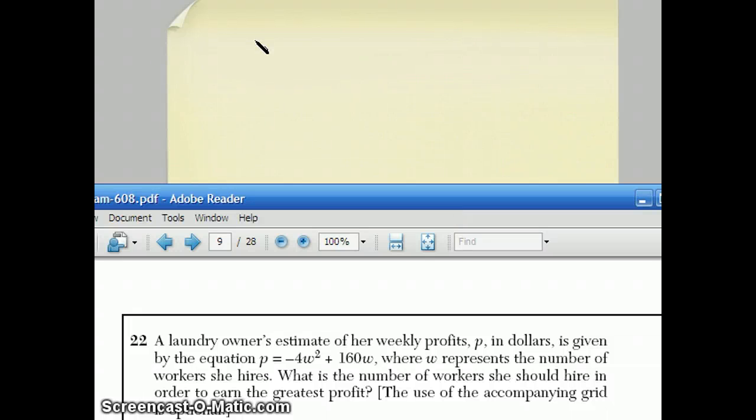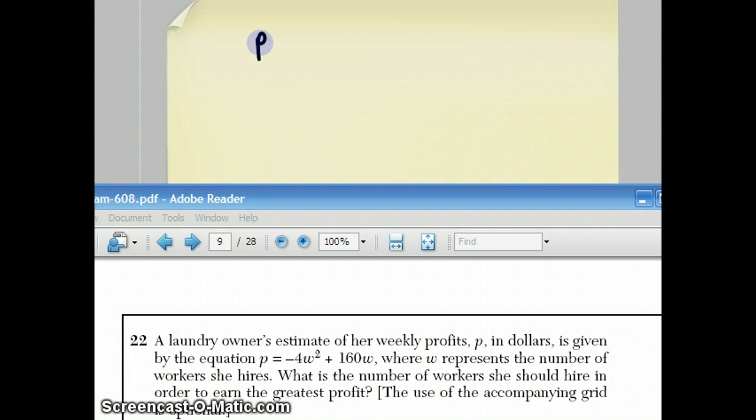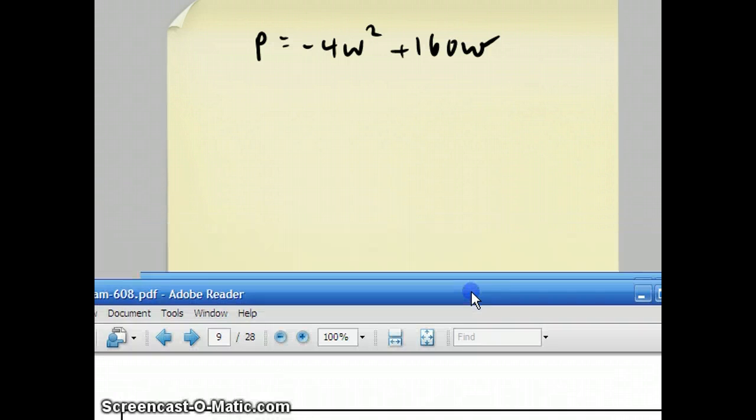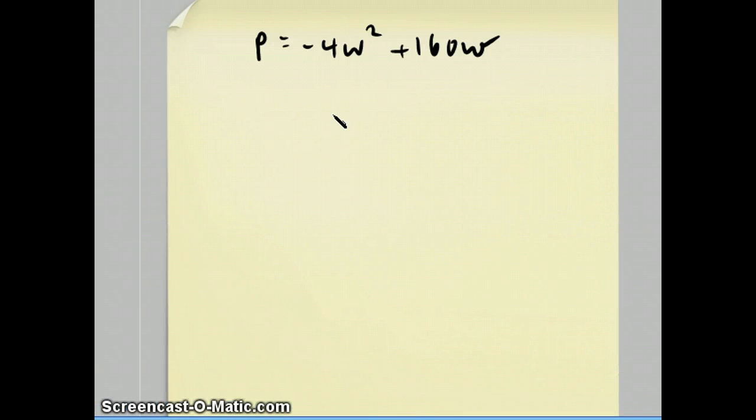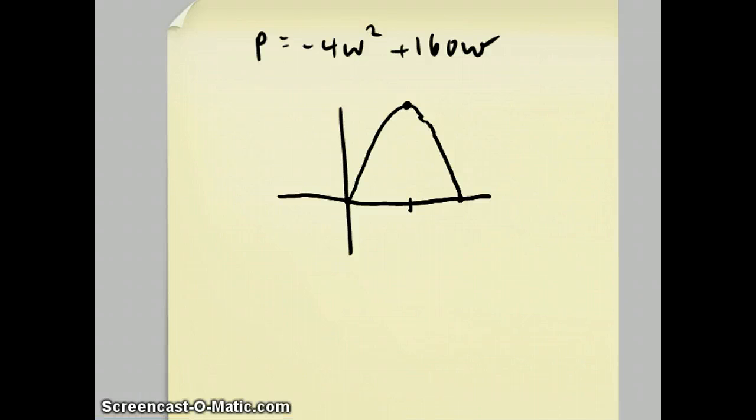Well, what we have going on here is when you have an equation like P equals minus 4W squared plus 160W, if you were to graph that, you get something like this. Basically, if she doesn't have any workers, she doesn't make any money. But if she has too many workers, she doesn't make any money either. There's some perfect amount of workers so that she would make this maximum profit. And in terms of math, that's known as finding the vertex of this parabola. But they only want to know the x-coordinate of the vertex, and there's a formula for that.